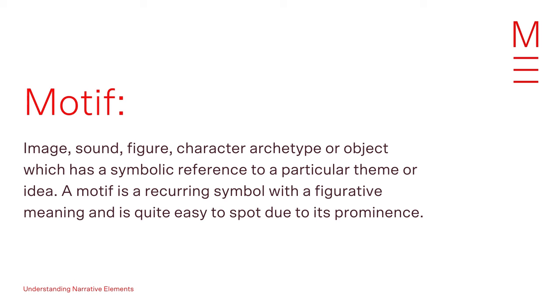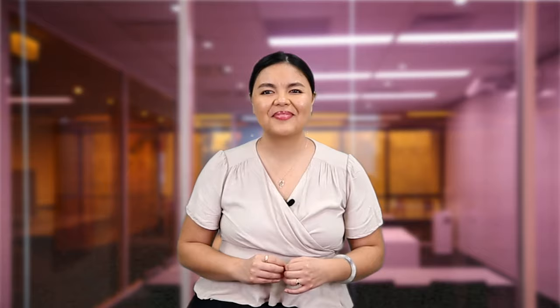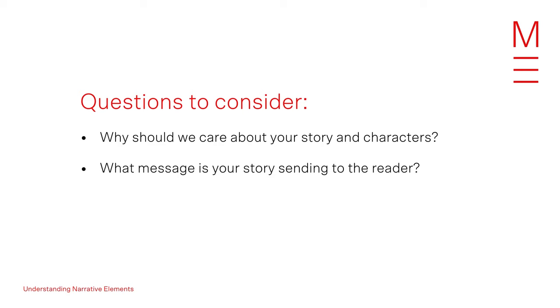Onto the next narrative element: the motif. A final narrative element to think about including in your creative writing stories is the motif. Matrix Education defines a motif as an image, sound, figure, character or character archetype, or object which has a symbolic reference to a particular theme or idea. A motif is a recurring symbol with a figurative meaning and is quite easy to spot due to its prominence. Including a motif in your creative writing story plan will elevate the purpose and underlying message of your piece. When deciding on a motif, first ask yourself: why should we care about your story and the characters within it, and what message is your story sending to your reader?